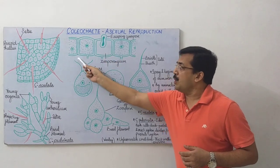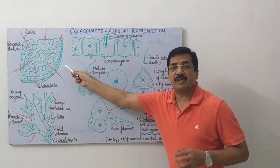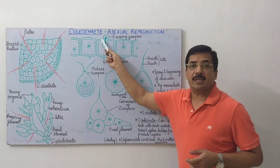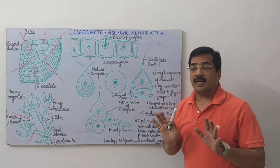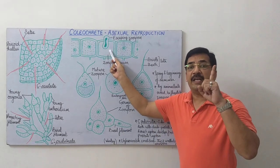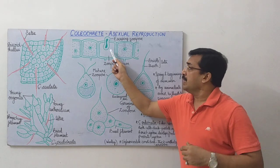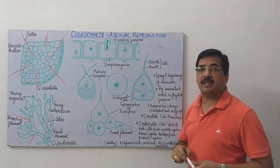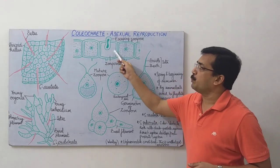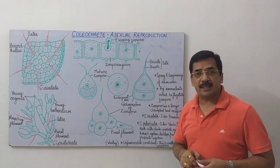Thallus ki koi bhi vegetative cell zoosporangium ki tarah kaam kar sakti hai. Ek zoosporangium se keval ek hi zoospore ka formation hota hai. Zoospore ke formation ki process mein, zoosporangium ka complete protoplast ek single zoospore mein convert ho jata hai.